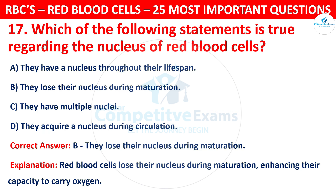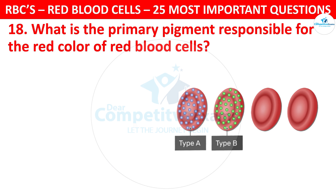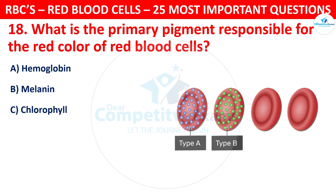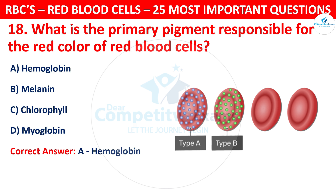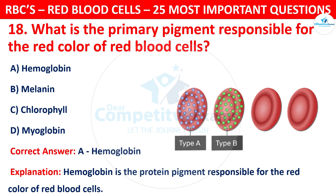Question 18. What is the primary pigment responsible for the red color of red blood cells? Your options are: Hemoglobin, Melanin, Chlorophyll, or Myoglobin. The correct answer is A, that is Hemoglobin. Hemoglobin is the protein pigment responsible for the red color of red blood cells.